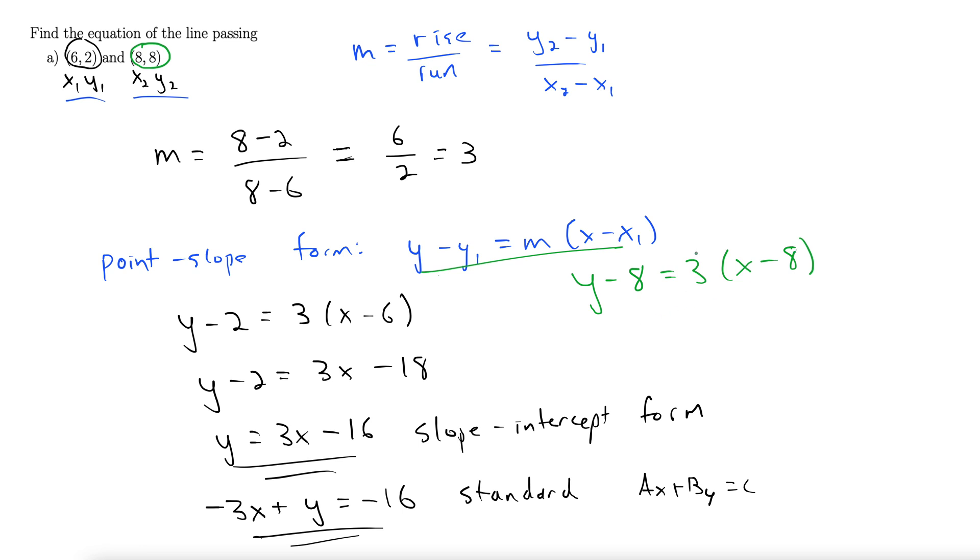Let's distribute the 3. Gives us y minus 8 equals 3x minus 24. Add the 8 to both sides. Y equals 3x minus 16. What do you know? Same thing.